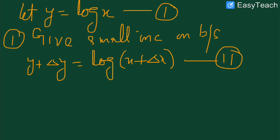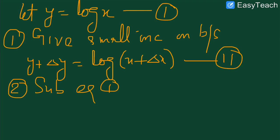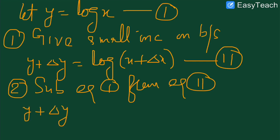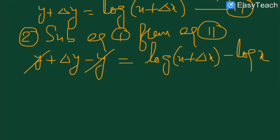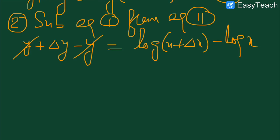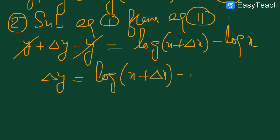Now let's move to step number two of the ab initio method: we subtract equation first from equation second. So we write: y plus delta y minus y is equal to log of x plus delta x minus log of x. This negative y and positive y will cancel out, and we get on the left hand side only delta y. So delta y is equal to log of x plus delta x minus log of x.